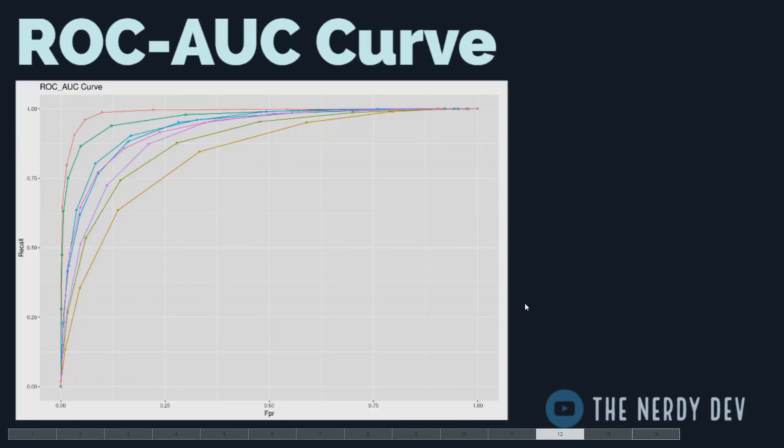Now for the final topic: the Receiver Operating Characteristic curve, commonly known as the ROC-AUC curve. The ROC and AUC curves are yet another important performance evaluation metric for classification models. By studying the curves, you can compare multiple classifiers and check which has the best statistical power of prediction. The AUC (Area Under Curve) gives the rate at which the model is getting correct classifications.